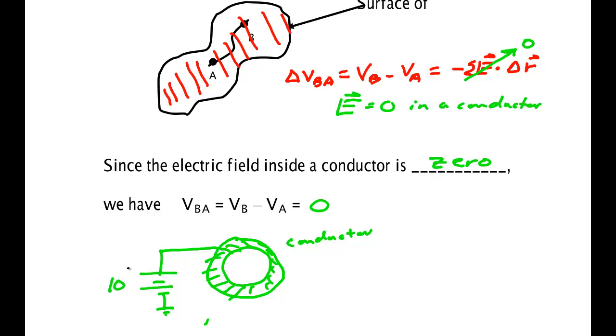Then every point inside here would be at 10 volts. The point on the surface would be at 10 volts. The point right over here would be at 10 volts. All the charge in this case lies on the outside of the conductor.